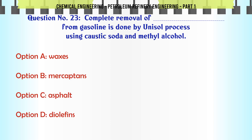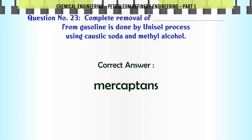Complete removal of mercaptans from gasoline is done by the Unisol process using caustic soda and methyl alcohol. A. Waxes, B. Mercaptans, C. Asphalt, D. Diolefins. The correct answer is Mercaptans.